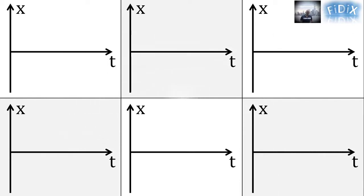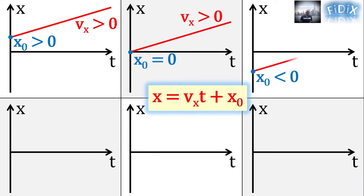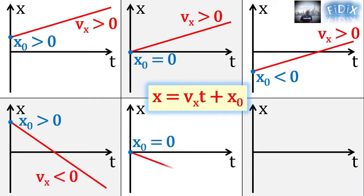For the position-time graph, x satisfies the equation of a straight line having x0 as its vertical intercept and Vx as its slope. Therefore, we can have six cases depending on the signs of x0 and Vx. Thank you for watching.